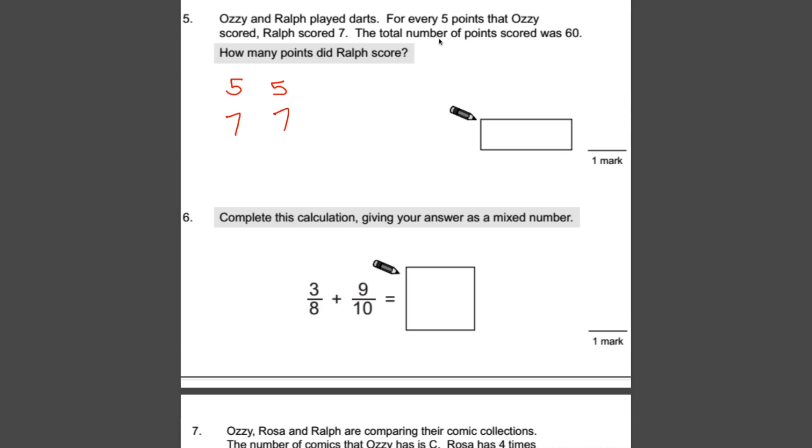What I did was slightly differently, and some people might do it this way. I did write, well, every time they play, Ozzie and Ralph total 12 points, and they keep going that way. So how many 12s fit into 60? Well, you should know that five times 12 equals 60. So they'll have played five rounds. That was the way I thought about it in my head anyway. If they played five rounds, well, in those five rounds, Ozzie would have scored five times five.